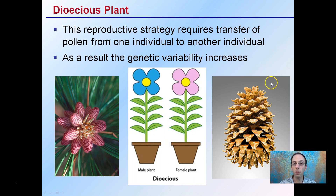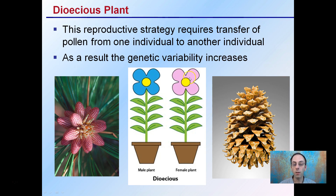Dioecious plants have a reproductive strategy that requires transfer of pollen from one individual to another. Here we have a male plant, which will only produce male flowers, and a female plant that will only produce female flowers. As a result, the genetic variability will increase, since a separate plant producing pollen and a separate plant producing female portions need to transfer that pollen, which helps increase genetic variability for the species.